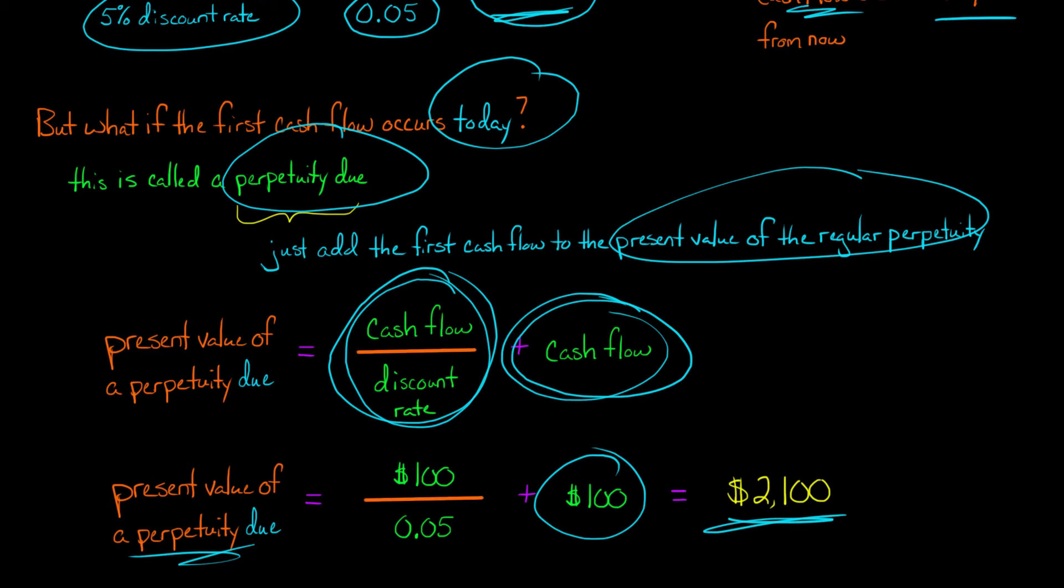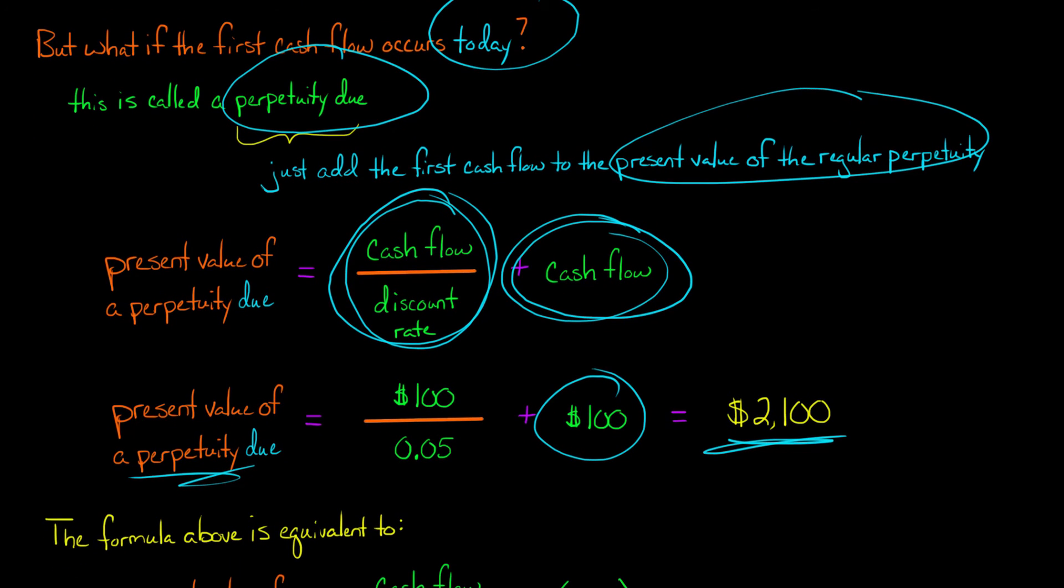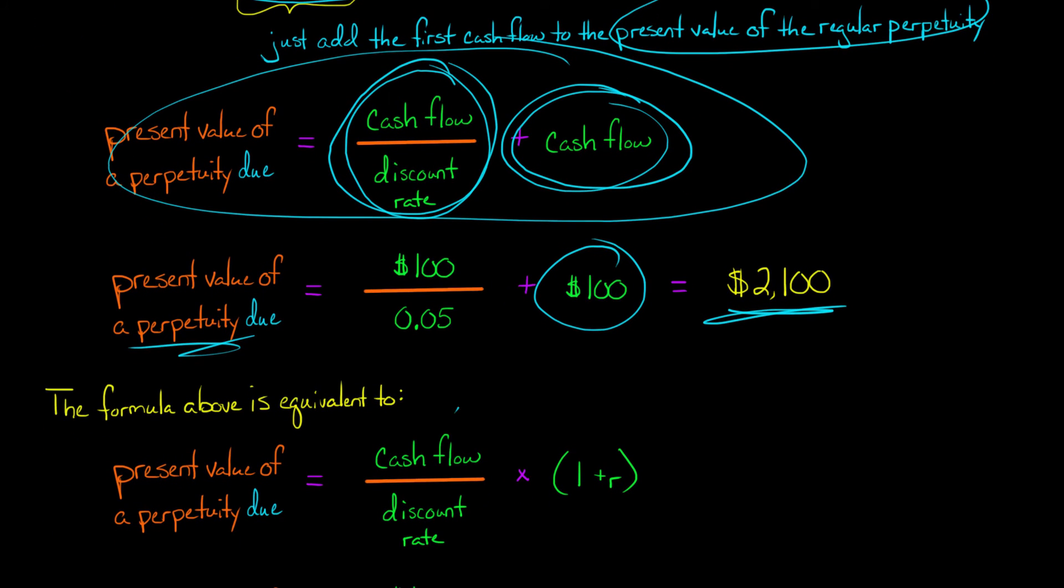So it'd be $2,100 would be the present value of a perpetuity due, whereas the present value of the regular perpetuity had been $2,000. Now this formula here for the present value of a perpetuity due, you could also rearrange that as this, where you have the cash flow divided by the discount rate times one plus r. That will give you the present value of a perpetuity due.